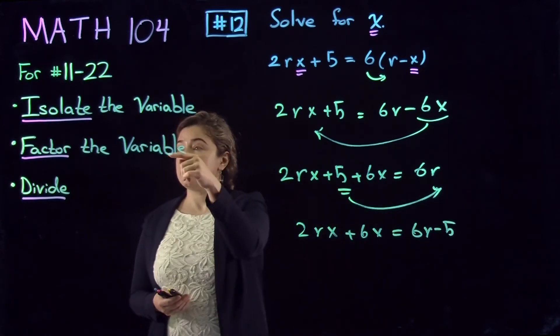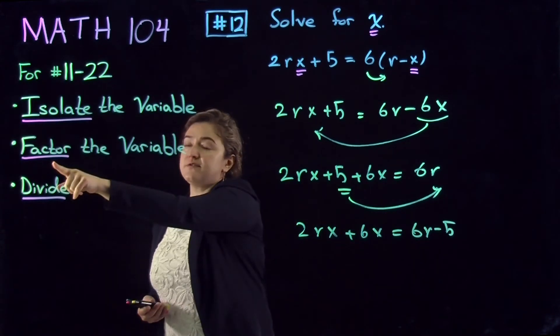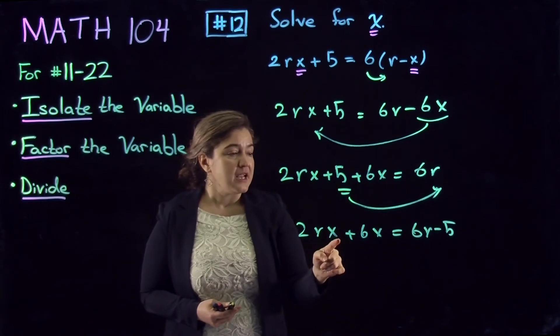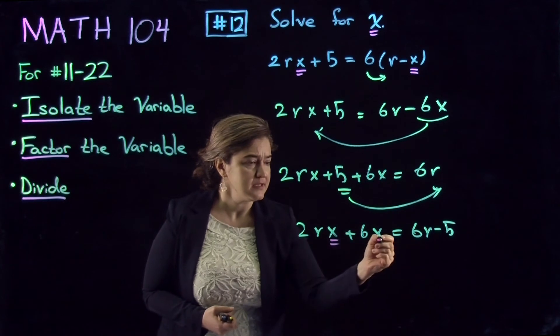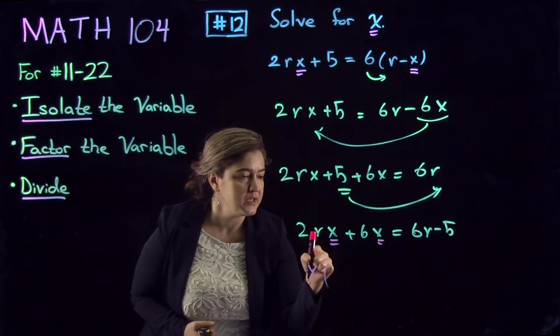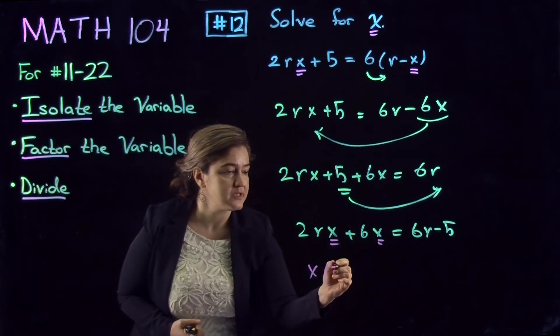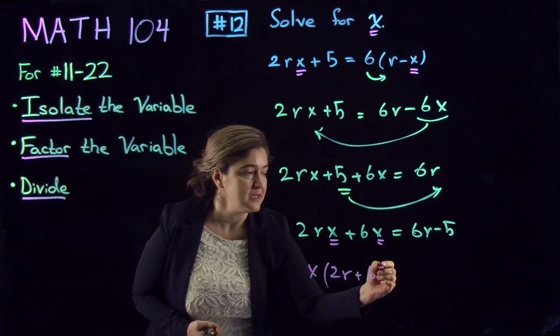Now, it's the second step. What we do is factor. Factor X out of the isolated side. Factoring X, what is remaining out of the first term is 2R, out of the second term is 6.